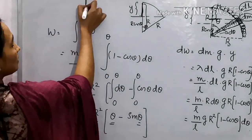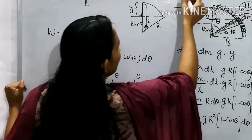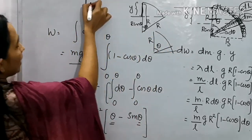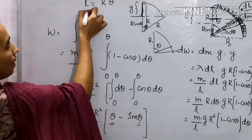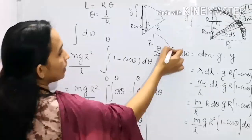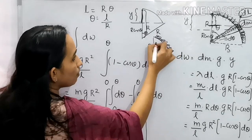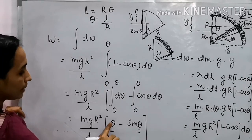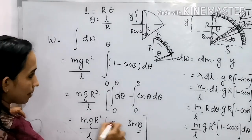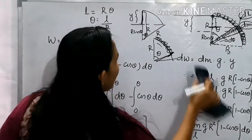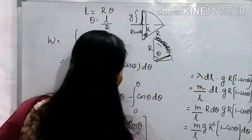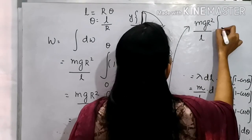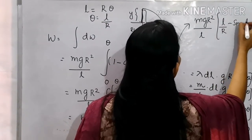Now the chain extends through a total angle. If the length of the chain is l and the radius is r, then the angle subtended is θ = l/r. So we substitute: the upper limit is l/r instead of π/2. The arc length relation gives l = r·θ, so θ = l/r, and we substitute this into the expression.